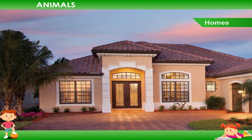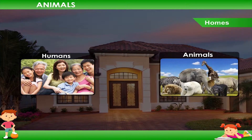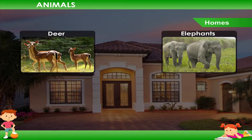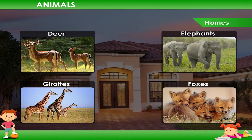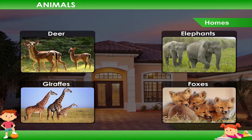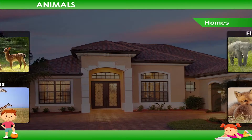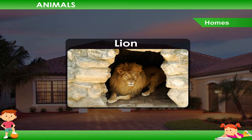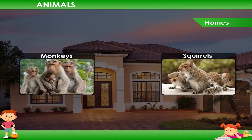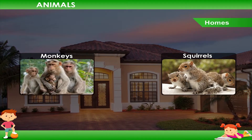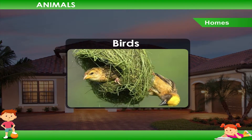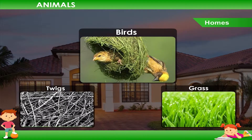Homes. Like humans, animals also need a place to live. Deer, elephants, giraffes, foxes etc. live on land. Some animals live in special places. A lion lives in a den or a cave. Monkeys and squirrels live on trees. Most birds live on trees and build their nests using twigs and grass.